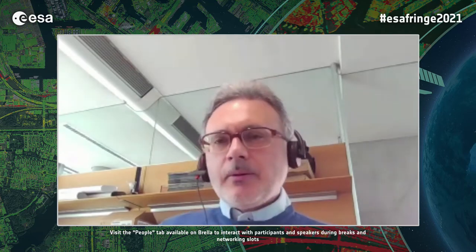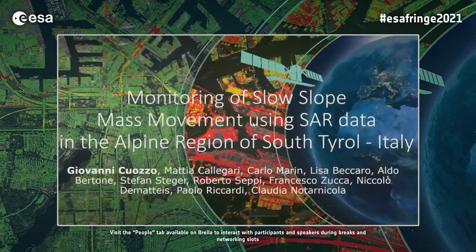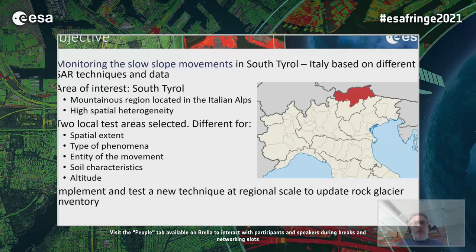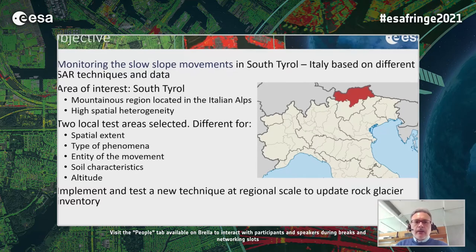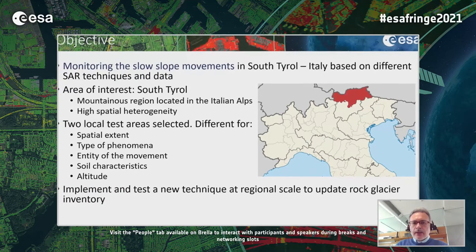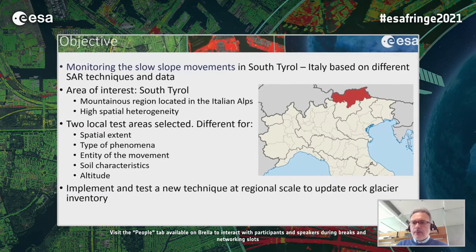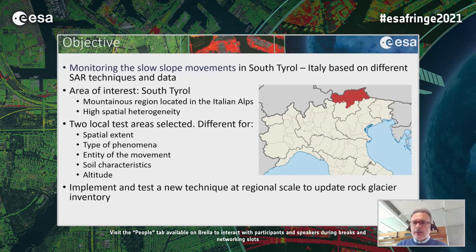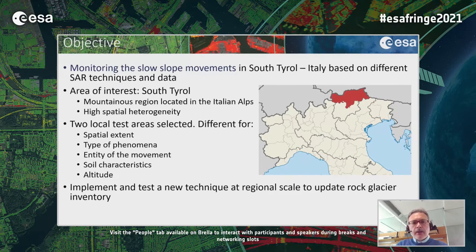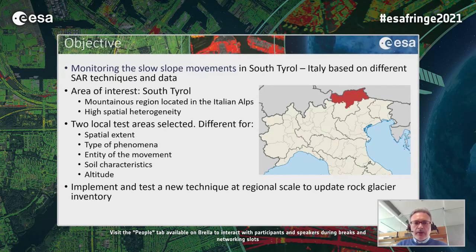Thank you. I will start the presentation by showing the objectives of this work, which are the monitoring of slow slope movements in South Tirol based on SAR techniques. The South Tirol is located in the northern part of Italy at the boundary with Switzerland and Austria, and is characterized by a mountainous region with very high spatial heterogeneity. We selected two test areas: one is a rock glacier, the other is a landslide landform.